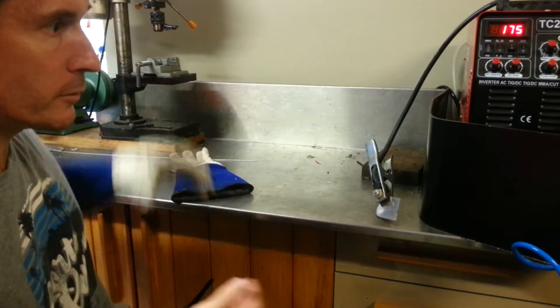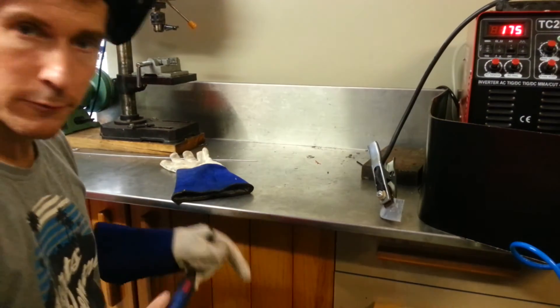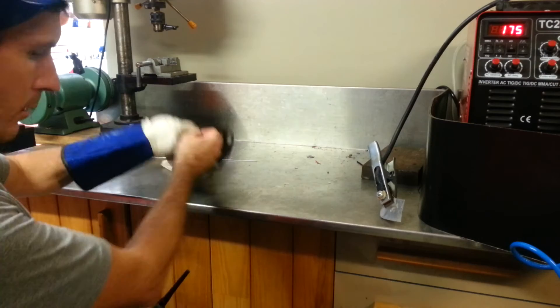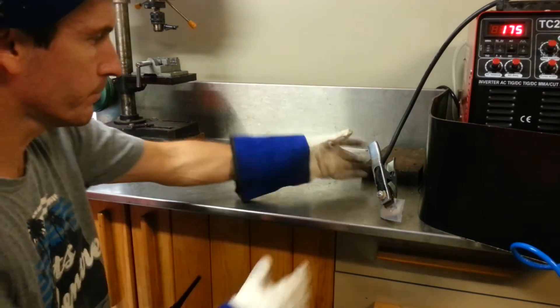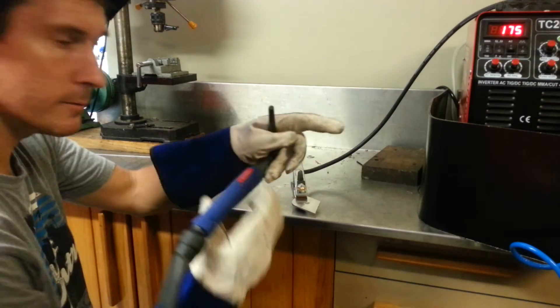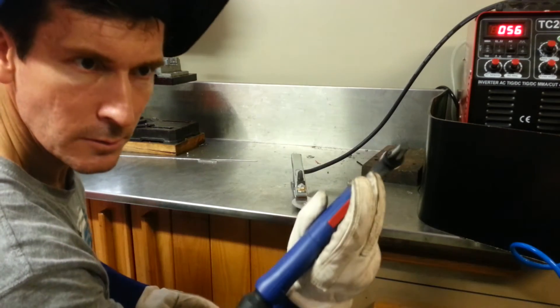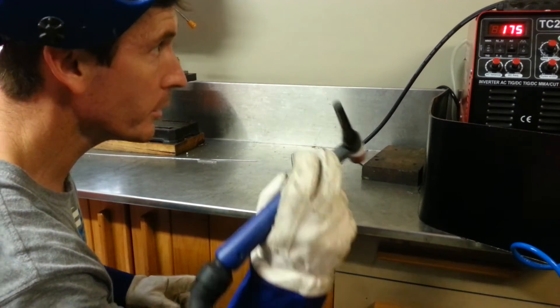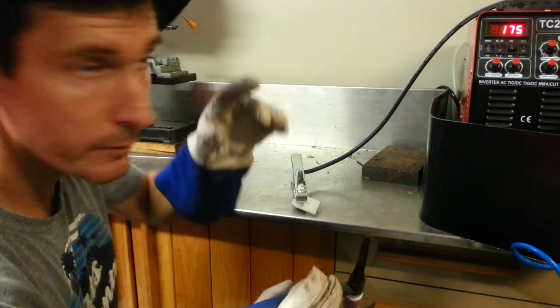If we just change over from the foot pedal to the handpiece, just to show that it's not been on the foot pedal. The pedal's out of the way now, just be using the button. You can hear the post flow still working, it's still at 175 amps up there.